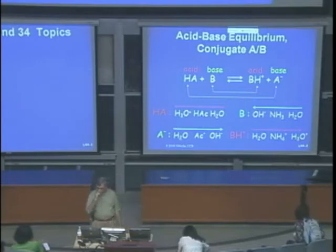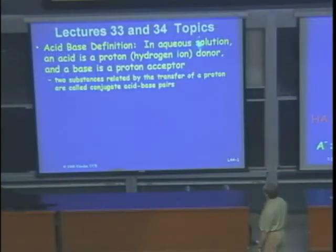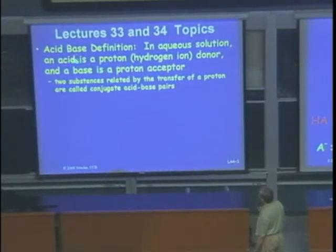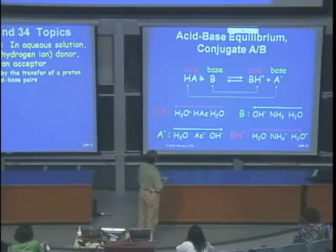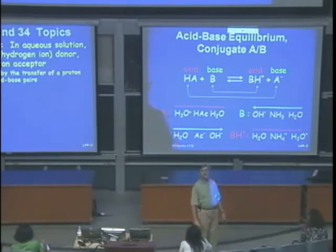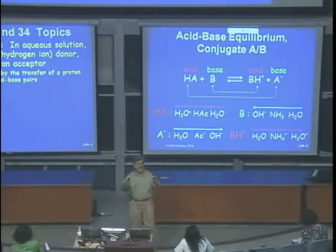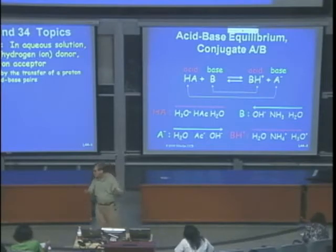In the first lecture after the midterm we discussed acid-base. In aqueous solution, an acid is a proton donor — it gives a proton (hydrogen ion) to the base, and the base is the acceptor. The two substances are related by the transfer of a proton; they are called conjugate acid-base pairs. A strong acid is completely dissociated — 100% dissociated. The Ka of a strong acid is very large, much larger than one. For weak acids, Ka is smaller than one, very often much smaller than one.